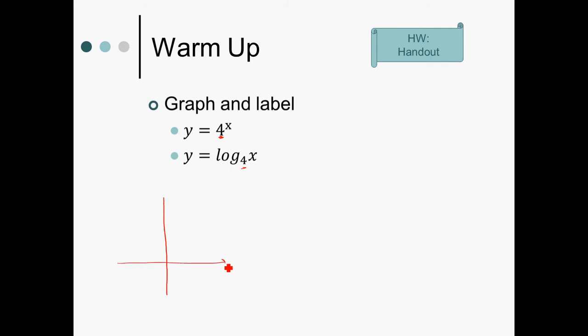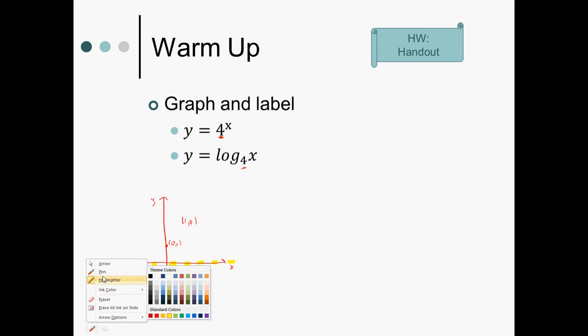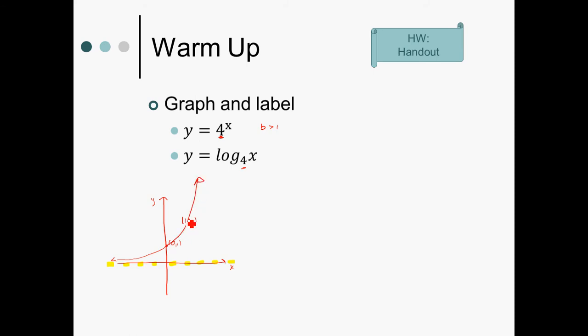So graphing four to the x needs the y-intercept, needs the point one comma four, needs the horizontal asymptote at y equals zero. And since the base is greater than one, I am going to slide slowly to the y-intercept and swoosh to infinity.